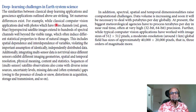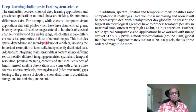For example, while classical computer vision applications deal with photos that have three channels — red, green, and blue — hyperspectral satellite images extend to hundreds of spectral channels well beyond the visible range, which often induce different statistical properties to those of natural images.